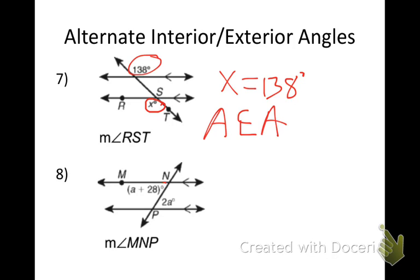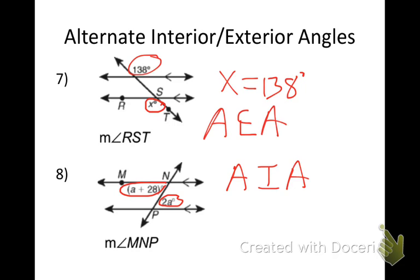Number eight — I have A + 28 and 2A. What type of angles are those? Are they exteriors or interiors? This angle is in between the lines, and so is the red one — so that would be alternate interior angles. Now what do I do? I set them equal: A + 28 = 2A. Subtract A — and I get A = 28.